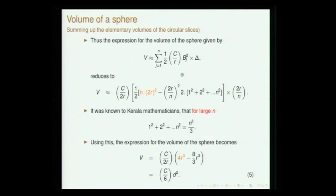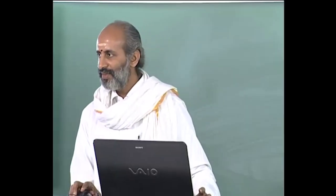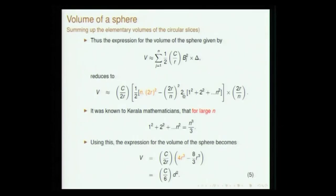This result for the sum of squares was known, and once you substitute it in, what you get is 4r³ − (8/3)r³, which turns out to be (4/3)πr³ as we understand today. So there is a very neat proof which has been presented by Jayastha Deva in his Yukti Bhasha.